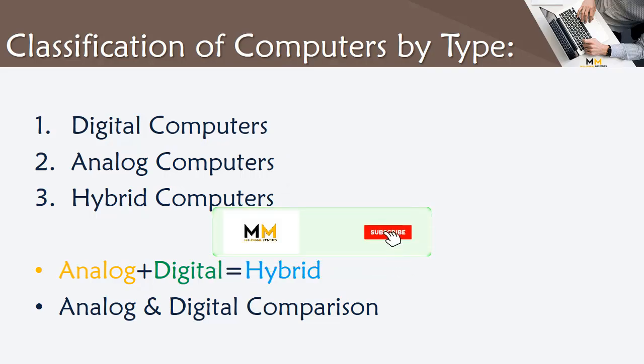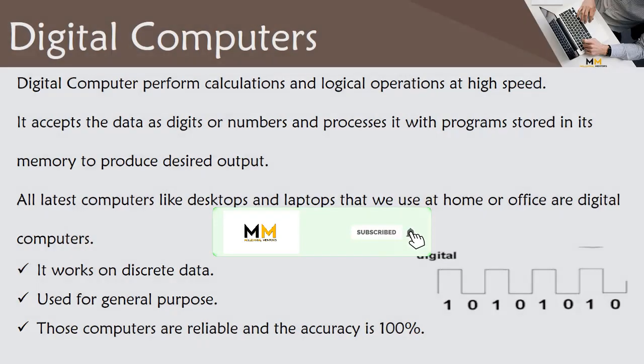Let's learn about them one by one. Digital Computers perform calculations and logical operations at high speed. They accept data as digits or numbers and process it with programs stored in memory to produce the desired output. All latest computers like desktops and laptops that we use at home or office are digital computers.